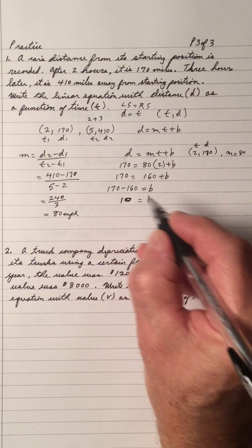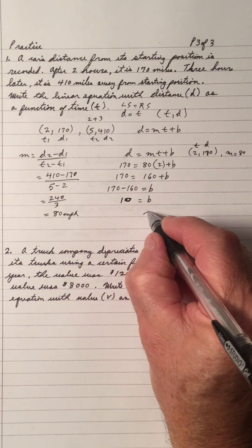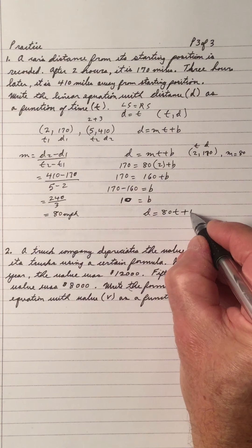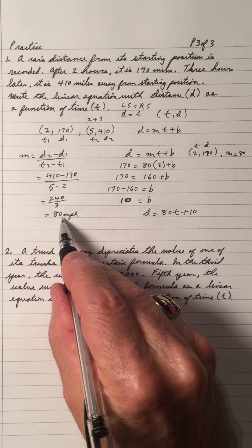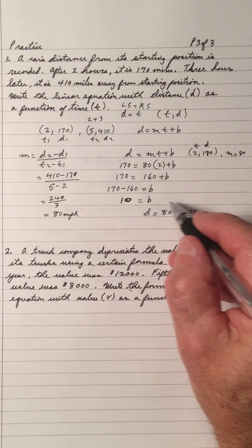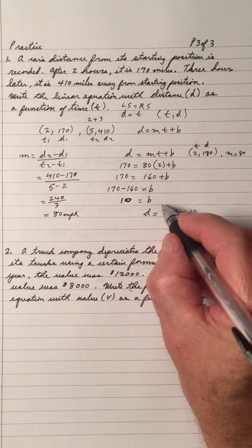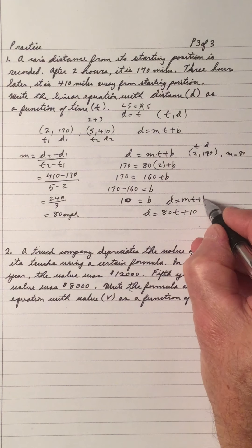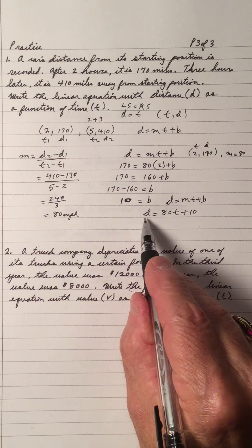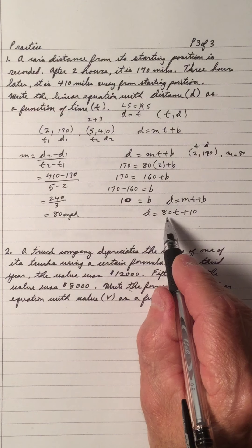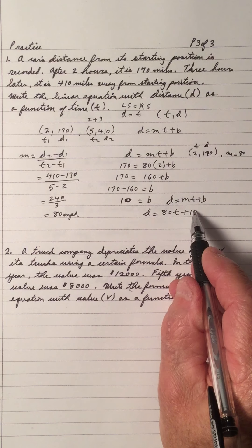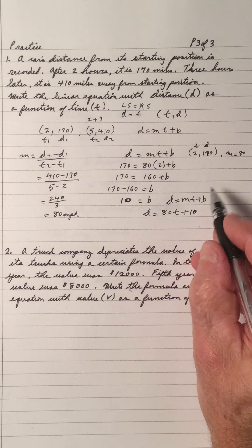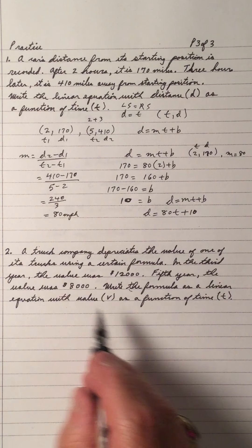So my equation is distance equals 80t plus 10. The rate is 80 and b is 10. So the car is traveling at 80 miles per hour, starting off at 10 miles from the starting point.